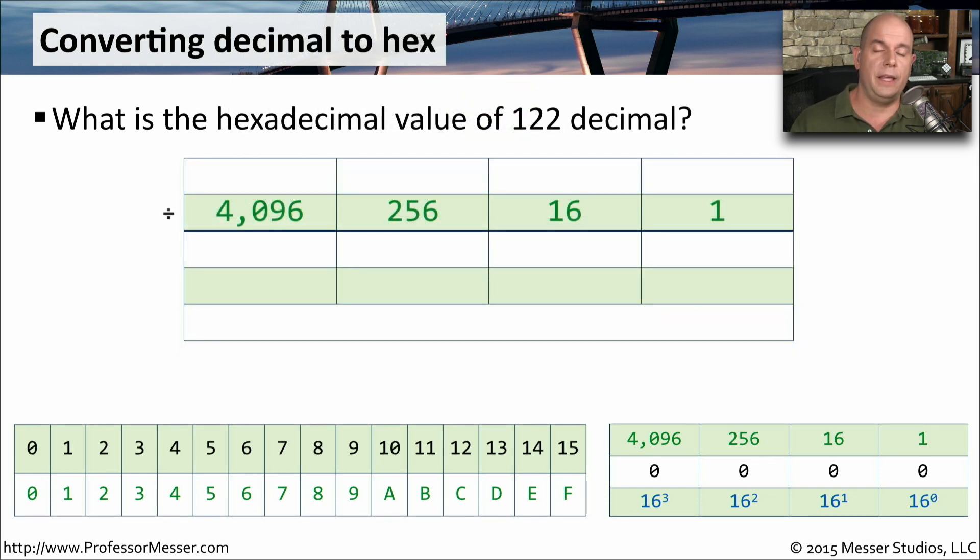Now let's perform the conversion the other direction, where we have a decimal number and we want to determine the hexadecimal value. In this question, we want to know the hexadecimal value of 122 decimal. So we'll put our conversion chart down. We want to put the 122 in our conversion chart as far as possible to the left, where 122 is greater than the number in the conversion chart. 122 is not greater than 4096, not greater than 256, but 122 is greater than 16, so we'll place the 122 in this column.